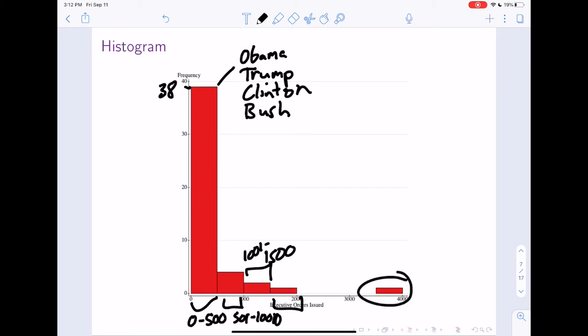Now, this over here is still that one individual. And this individual is FDR. And maybe you guessed it was FDR. As you probably learned, FDR was president for a very long time. So it makes sense why he would have maybe more executive orders than everybody else.